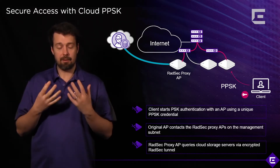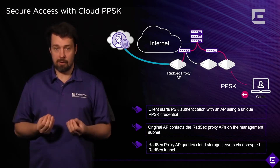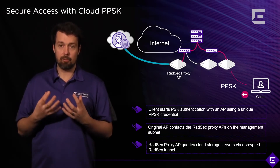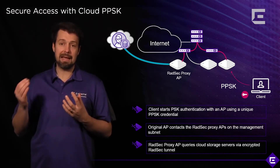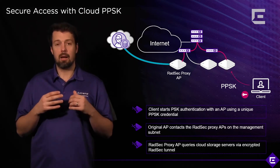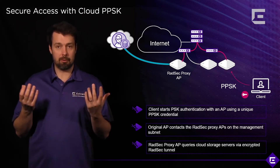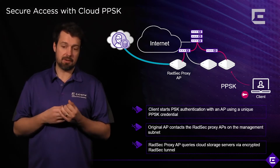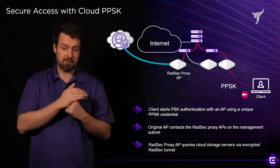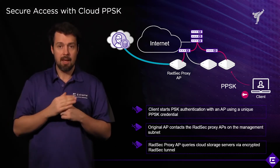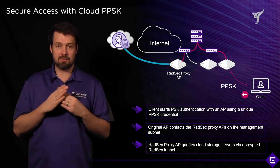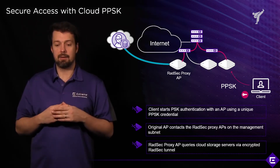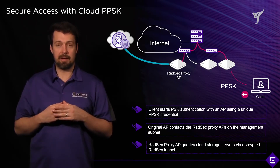If the client device connects to a non-RATSEC proxy AP, that AP will relay the message. Using cooperative control protocols, it knows which AP is the RATSEC proxy, and relays the authentication request to that RATSEC proxy first.